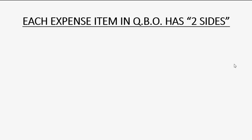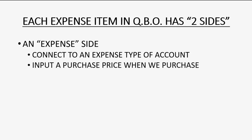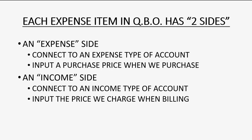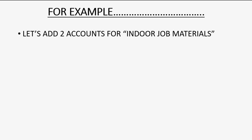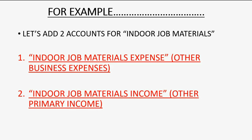Now each expense item has two sides. There's the expense side that you connect to an expense type of account, and you put in the purchase price when you are purchasing it. Then you have the income side of the item, which means you connect it to an income type of account and put the price we charge the client when we bill. For example, we'll add two accounts: indoor job materials expense with detail type other business expenses, and indoor job materials income with detail type other primary income. These will be the two accounts that our expense items will be tracked to before we record transactions with them.